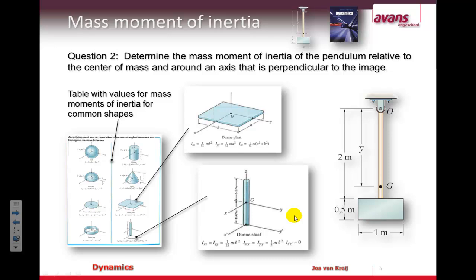Now we need to determine the mass moment of inertia. For that you can use a table in the Hibbeler book — there's a table in the back of the book, on the last page, that shows the predefined mass moments of inertia for standard shapes. We're going to use the formula for the bar and the formula for the plate. The mass moments of inertia are given in all three coordinates. In this case we're going to rotate the plate around the z-axis, and for the bar we're going to rotate around either the x or the y direction — both have the same formula for x and y.